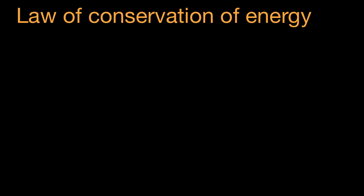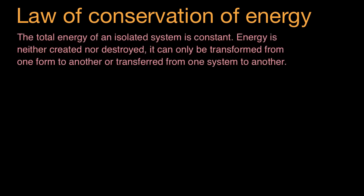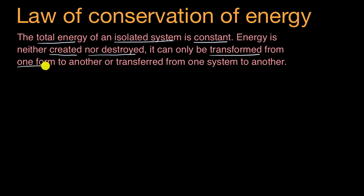Let's start with the language you might typically see, and then we'll try to understand it a little bit deeper. The law tells us that the total energy of an isolated system is constant. Energy is neither created nor destroyed — it can only be transformed from one form to another or transferred from one system to another.